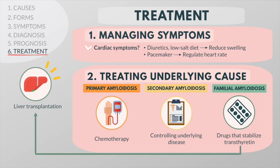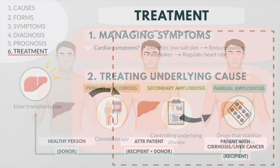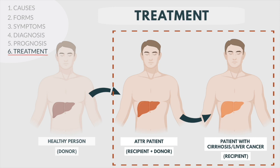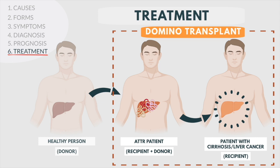In familial amyloidosis, drugs that stabilize the transthyretin protein are often prescribed, and liver transplantation may also be necessary. Liver transplantation can slow disease progression because the liver is where the mutant protein is produced. Interestingly, due to a shortage of donor organs, the liver removed from a person with familial amyloidosis is sometimes transplanted into people with a fatal liver disease such as cirrhosis or liver cancer. Such a domino transplant is possible because the liver from a familial amyloidosis patient is otherwise normally functioning, and although recipients may eventually develop amyloidosis, the transplant can save their lives in the short term.